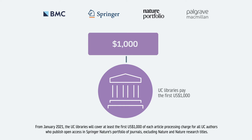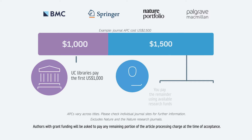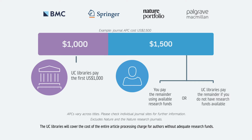Authors with grant funding will be asked to pay any remaining portion of the article processing charge at the time of acceptance. The UC Libraries will cover the cost of the entire article processing charge for authors without adequate research funds.